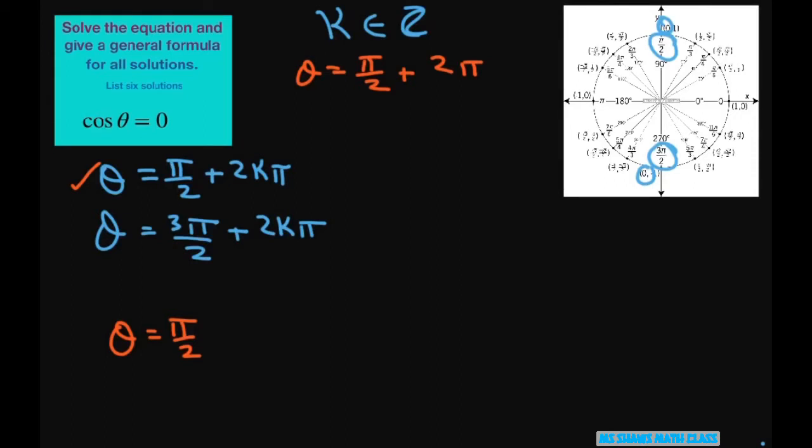So my common denominator is 2. So I can rewrite this as 4π/2, because that equals 2π. So just add these up and you get 5π/2.